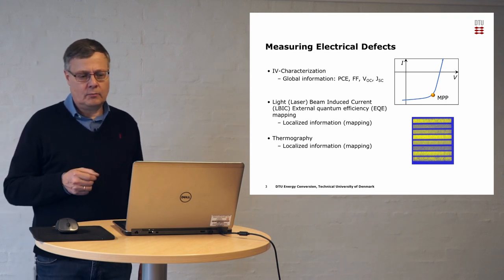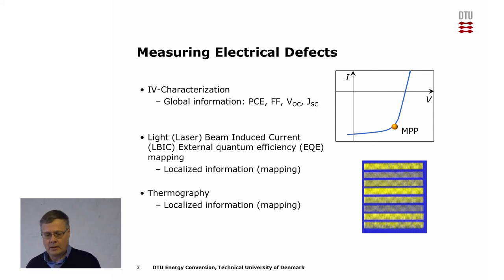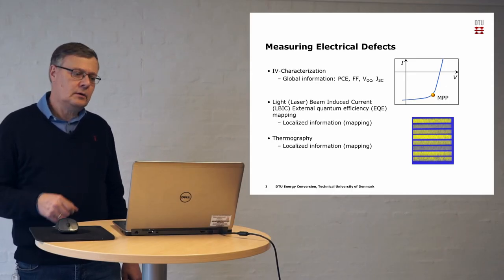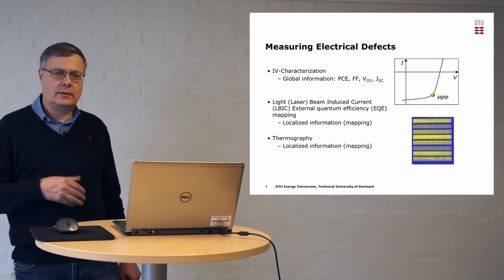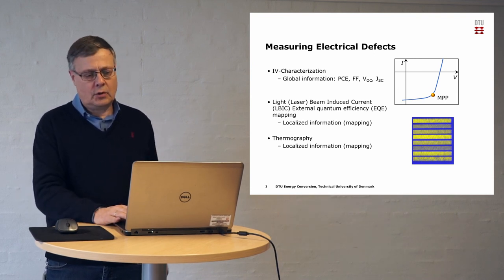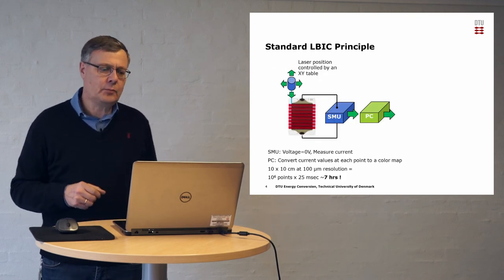The mapping technique we use here is the light beam induced current technique, also called laser beam induced current technique or external quantum efficiency mapping. This gives a picture where you can see how well the solar cell functions at a given point. There is a third technique called thermography, which measures the heat output of the solar cell and is the subject of a separate lecture. I'll briefly touch upon how the two methods are connected.